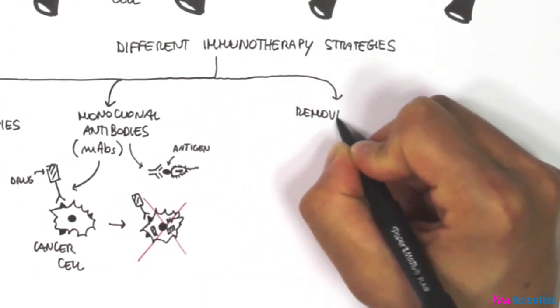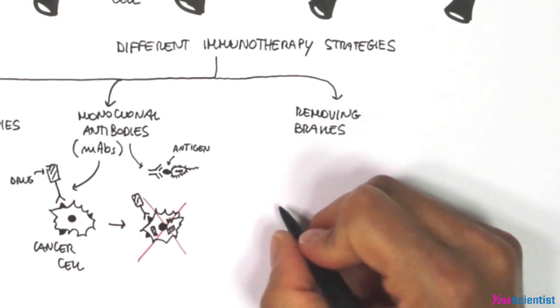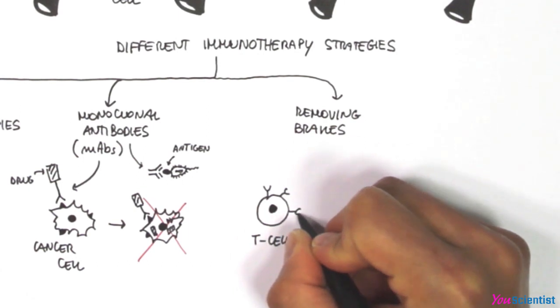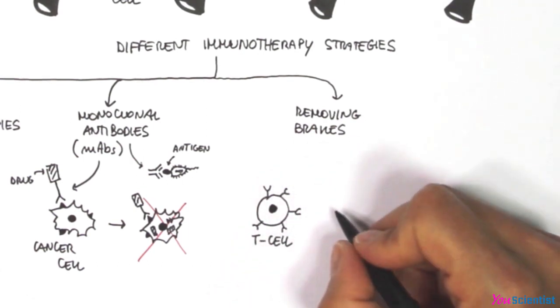Another possibility consists in removing brakes to the immune system. Some molecules on immune cells need to be turned on in order to start an immune response, but cancer cells are able to block that activation.